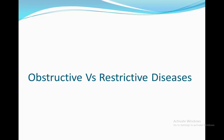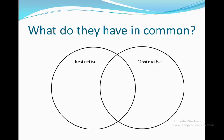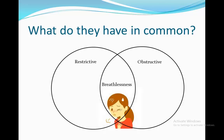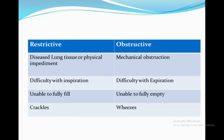The respiratory diseases are classified into two categories: obstructive and restrictive, and each one affects the lung volume differently. Both obstructive and restrictive diseases share one thing in common, and that is breathlessness. But on the other hand, as you can see on the table, they have many differences.